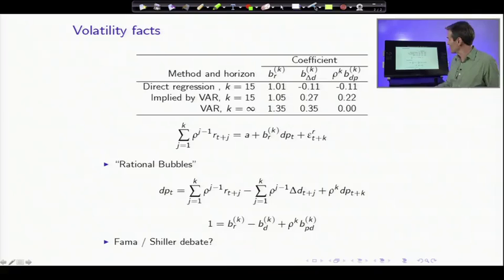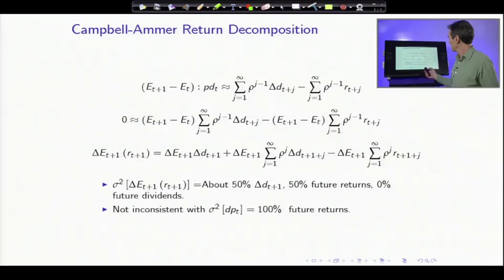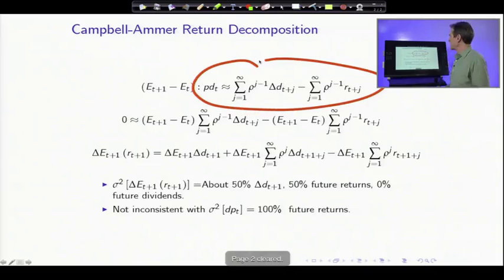Now there's one last very useful identity in this series, the return decomposition due to Campbell and Ammer. Let's take our present value relationship. So that's our present value identity as before.